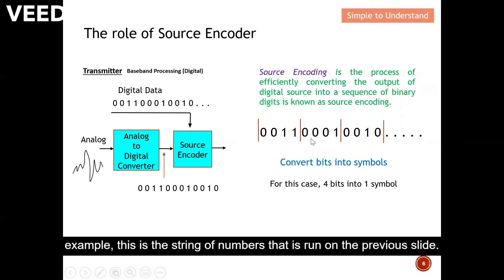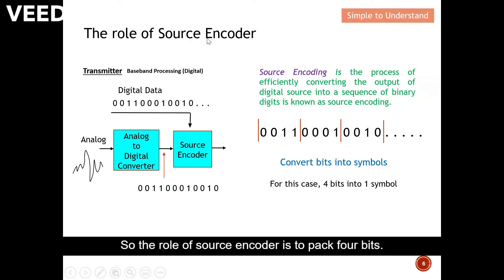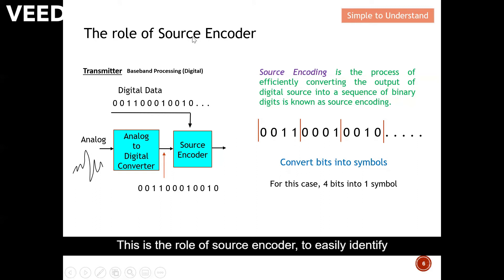Let's take a closer look on this example here. For example, this is the string of numbers that was shown on the previous slide. And again, for example, you know that four bits fit into one symbol. So the role of source encoder is to pack four bits. They need to identify the start bit and also the stop bit. With the start and stop bit, you can identify this as your first message. This is your second message and this is your third message. So this is the role of source encoder, to easily identify the message for you.